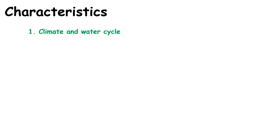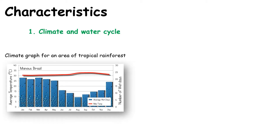We're going to look at characteristics of the rainforests across quite a few sections, the first being climate and water cycle. In terms of climate, the general temperature is about 27 degrees centigrade for the rainforests of the world, and that's throughout the year.